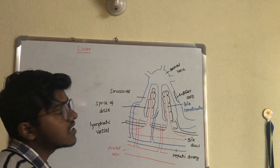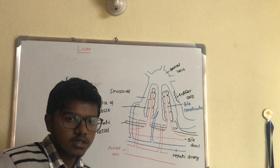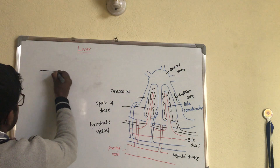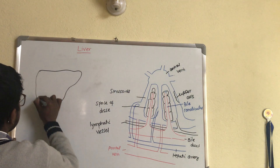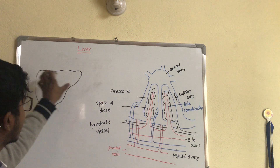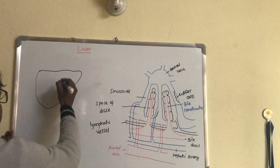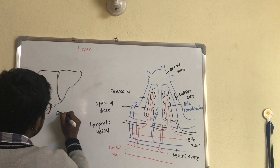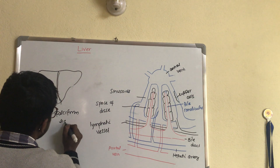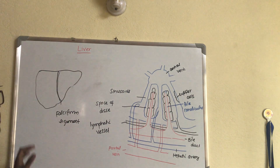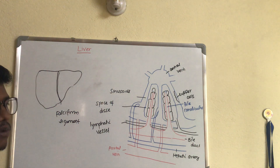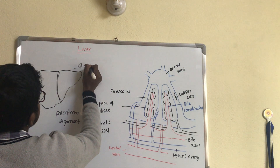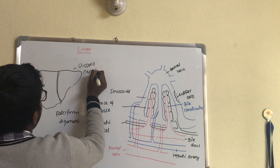Liver is the largest organ of our body and it lies in the right upper quadrant. It has got a shape with two lobes — the right lobe and the left lobe — and these both lobes are connected by a ligament known as the falciform ligament. Liver is covered by a mesenchymal structure called Glisson's capsule. This is about the anterior structure of liver.